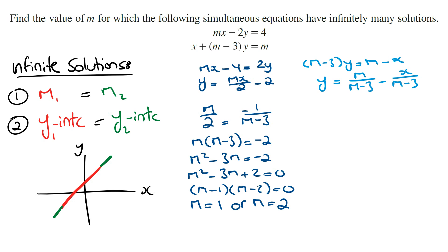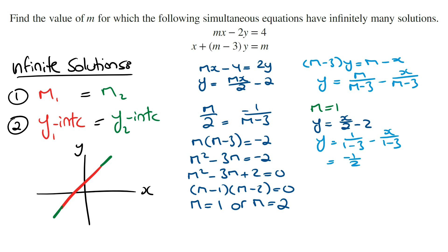Substituting m equals 1 into the first equation, we get y is equal to x over 2 minus 2. Substituting into the second equation, we get y is equal to 1 over (1 minus 3) minus x over (1 minus 3), which simplifies to 1 over negative 2, plus x over 2. From here, we can see the two lines have the same gradient of 1 over 2, satisfying the first condition, but they have different y-intercepts, which fails the second condition.